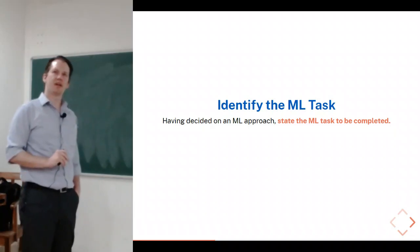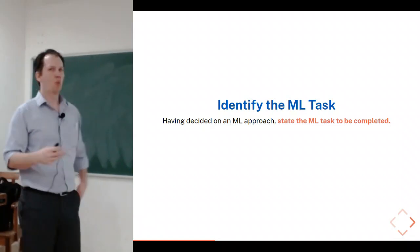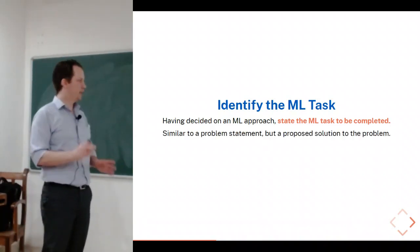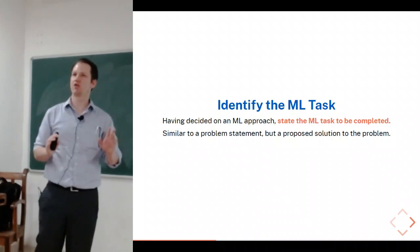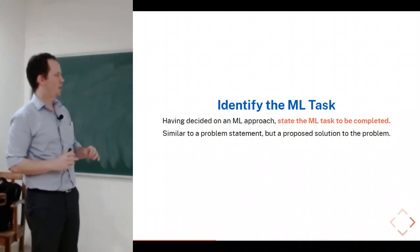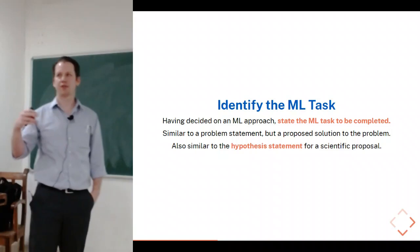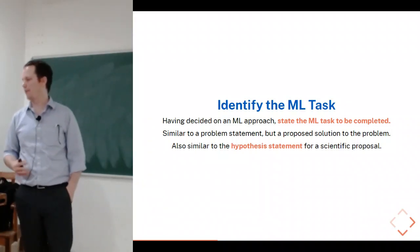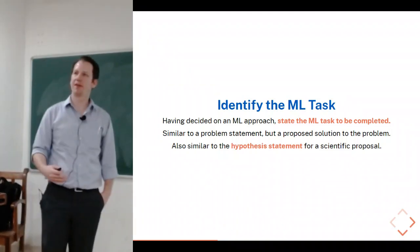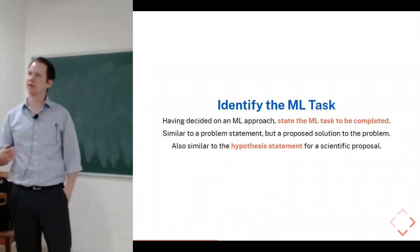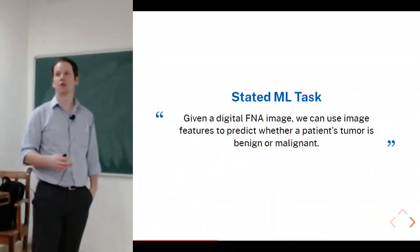Once you've decided that machine learning is the appropriate approach, you want to state what the job of the machine learning algorithm is — which is related to but different from the problem statement. The problem statement asks what situation exists in the world. The machine learning task is the proposed solution that machine learning will accomplish. For those interested in research, this is similar to a hypothesis statement — it suggests the experiment, how you'll evaluate it, and gives you a falsifiable statement in case the system doesn't work.